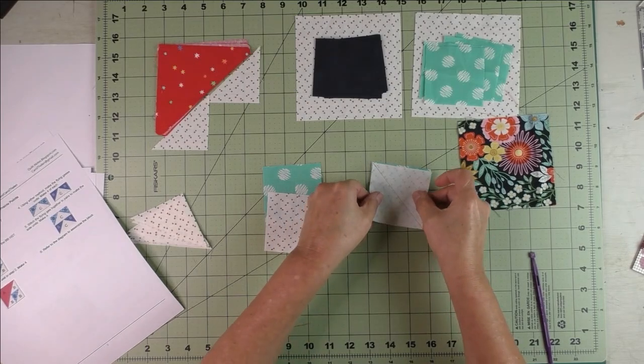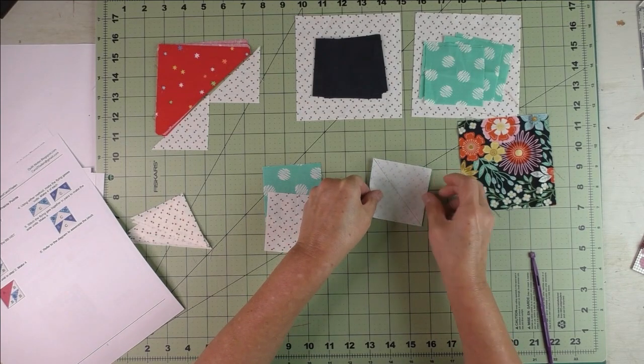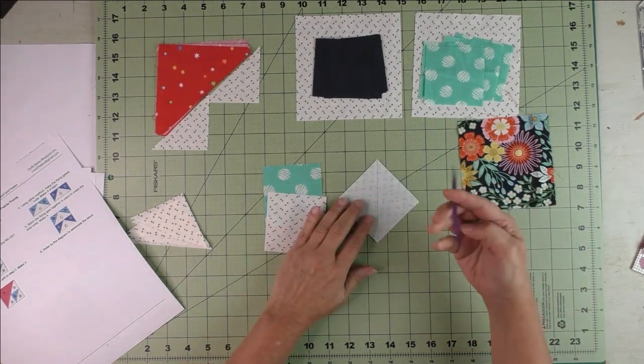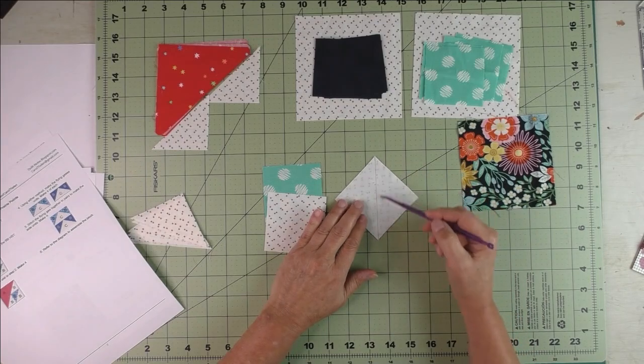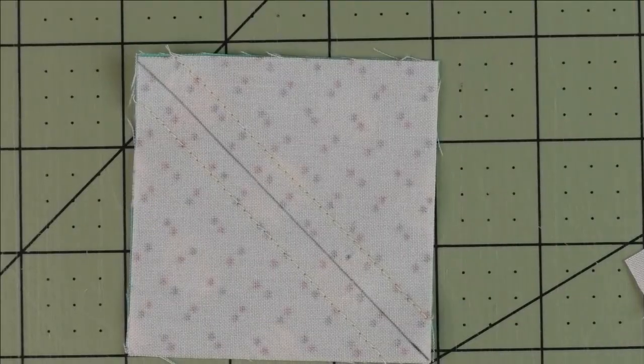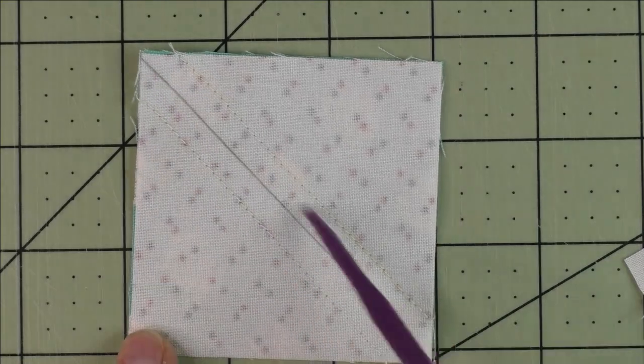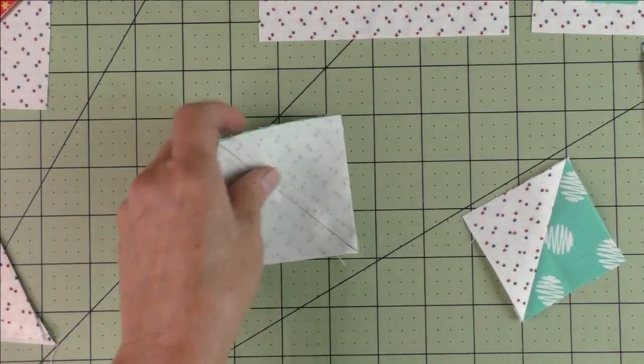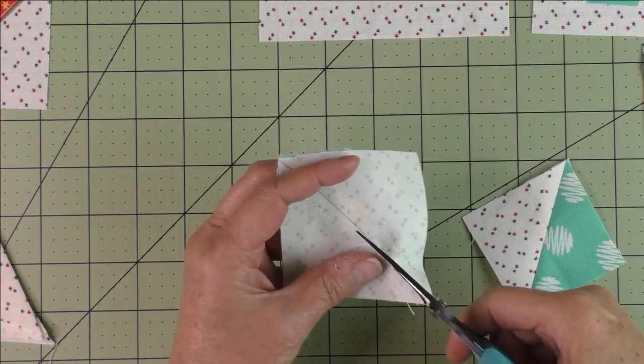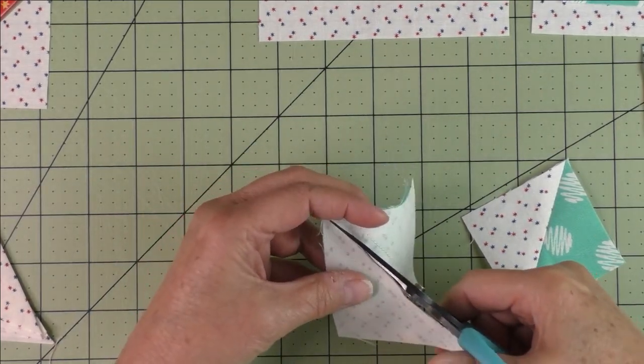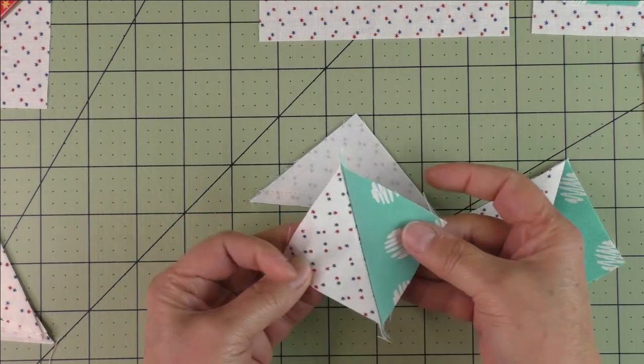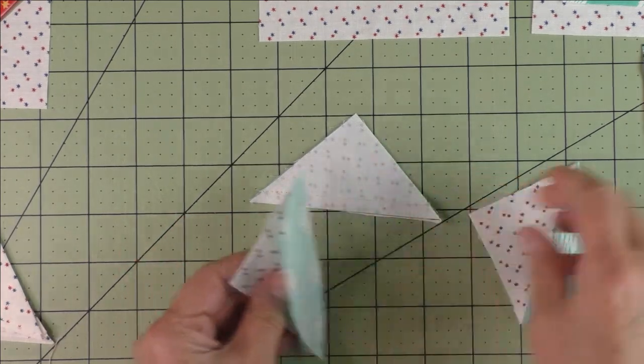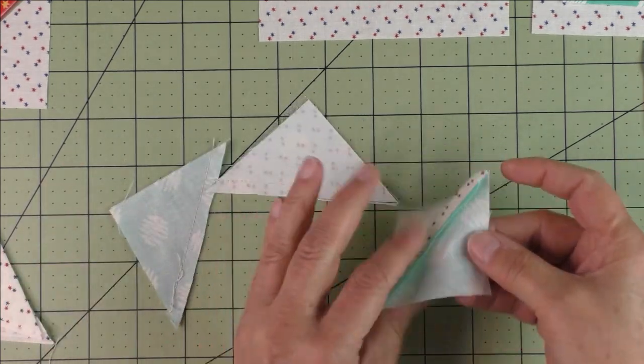Put the fabrics together right sides together and we're going to stitch on either side of the diagonal line. Here is the diagonal line drawn and then the stitching on both sides. Now we cut this in half along the diagonal line. Then we have our two half square triangles. Press the seams open and cut off the nubs.